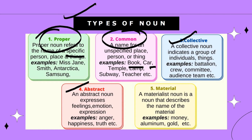Next is abstract noun. An abstract noun expresses feelings, emotions and expressions — these are things that we cannot see; we can only feel them. The things that are not visible to us yet can be felt are abstract nouns. For example, anger, happiness, truth, etc. We all know the meaning of these words and how they are to be felt, but we cannot see them — that is why they are known as abstract nouns.